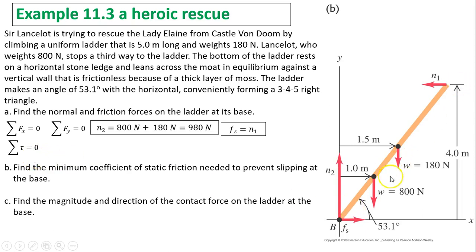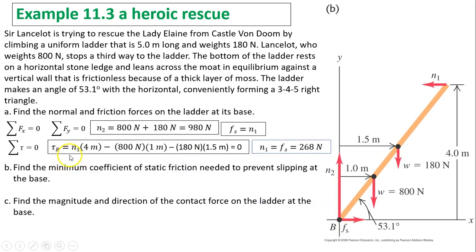The other condition is net torque equals 0. When you talk about net torque, you can choose any point. I choose point B because at B, I can get rid of two forces - Fs and N2 - because both do not produce torque at point B since their lever arm equals 0. N1 produces counterclockwise torque, so it's N1 times the lever arm of 4 meters. 800 newtons produces clockwise torque, 800 times the lever arm of 1 meter. 180 newtons has a lever arm of 1.5 meters. From here, I can solve for N1, and N1 happens to equal Fs, so they are both 268 newtons.